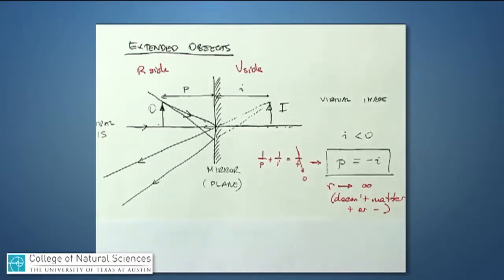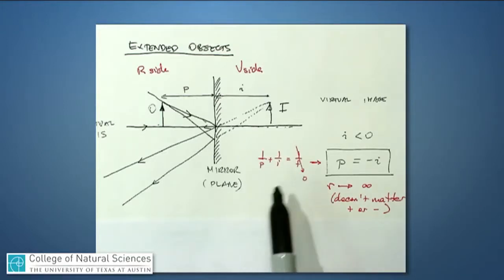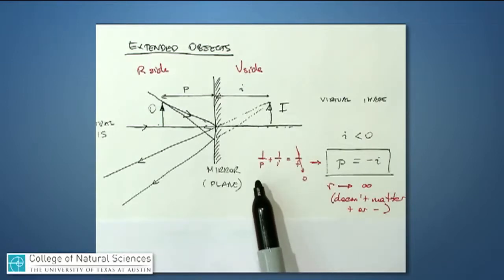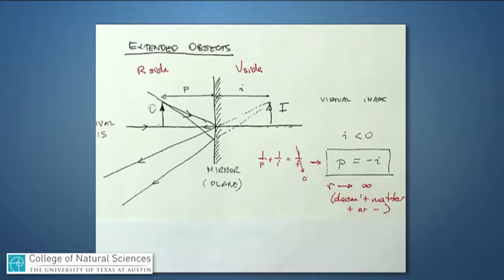I would like to go through some examples where we use our equation for the location of an image, taking different kinds of mirrors. Our starting equation is 1 over P plus 1 over I equals 1 over F. This relates the location of the object in front of a mirror to the location of its image and the focal length of the mirror.